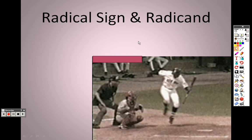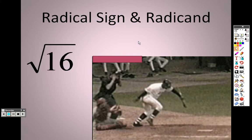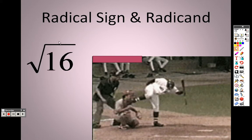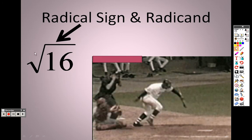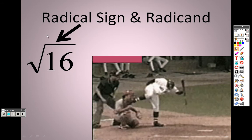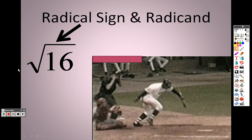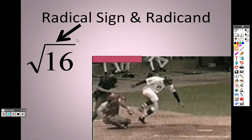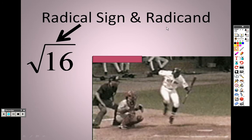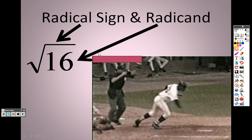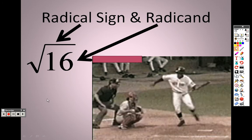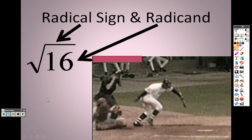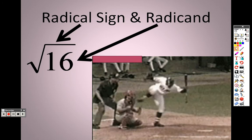So a radical sign and a radicand — we've got to know which one's which. That is a radical sign right there. See the radical bar? That is a radical sign. The radicand is the number underneath. So you understand when we're talking about these items what each item means.